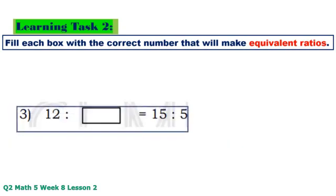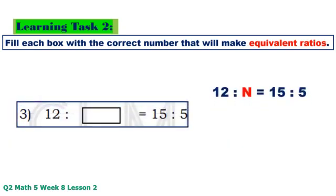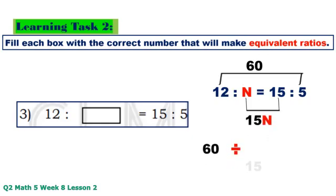Number 3: 12 times 5 equals 60, 10 times 15 equals 15N. 60 divided by 15 equals 4.